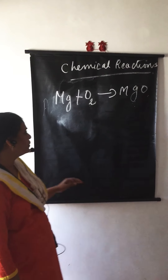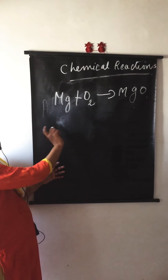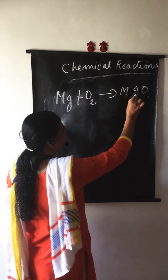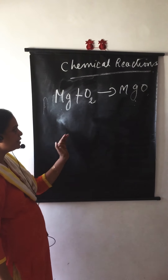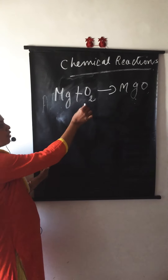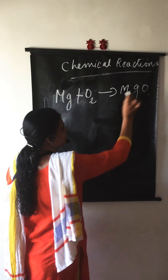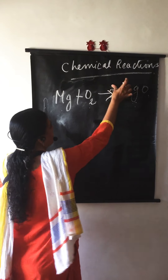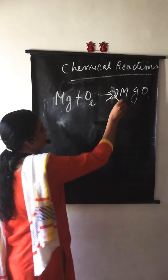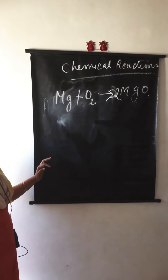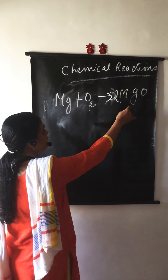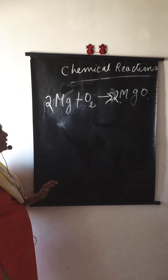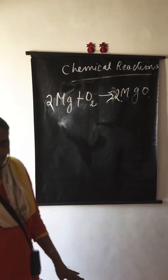Now let us balance this equation: Mg + O2 → MgO. On the left-hand side, one magnesium atom; right-hand side, also one magnesium atom — magnesium is balanced. But oxygen is 2 on the left and only 1 on the right. To balance that, write 2 in front of MgO — that gives 2 magnesium on the right. Then put 2 in front of Mg on the left. Now the equation is balanced: 2 Mg + O2 → 2 MgO.